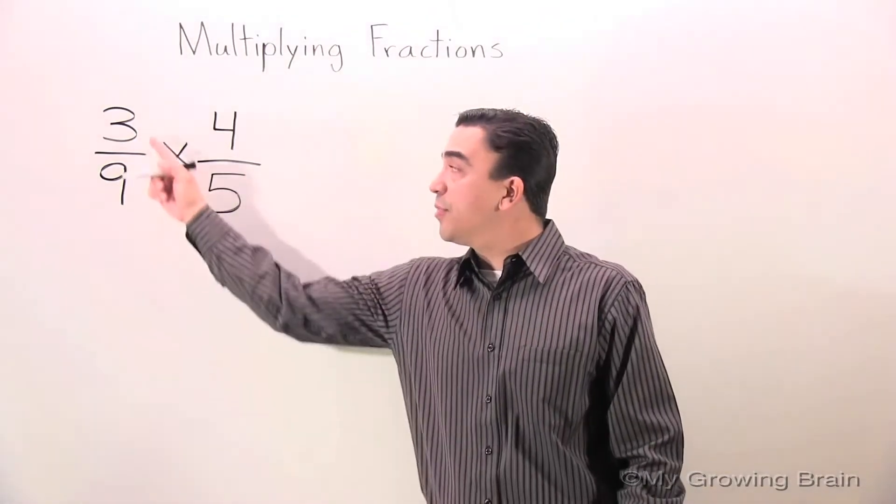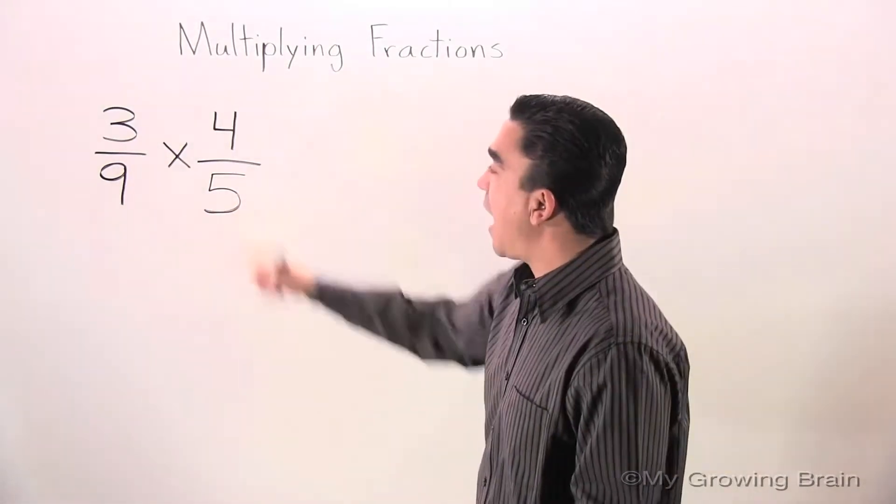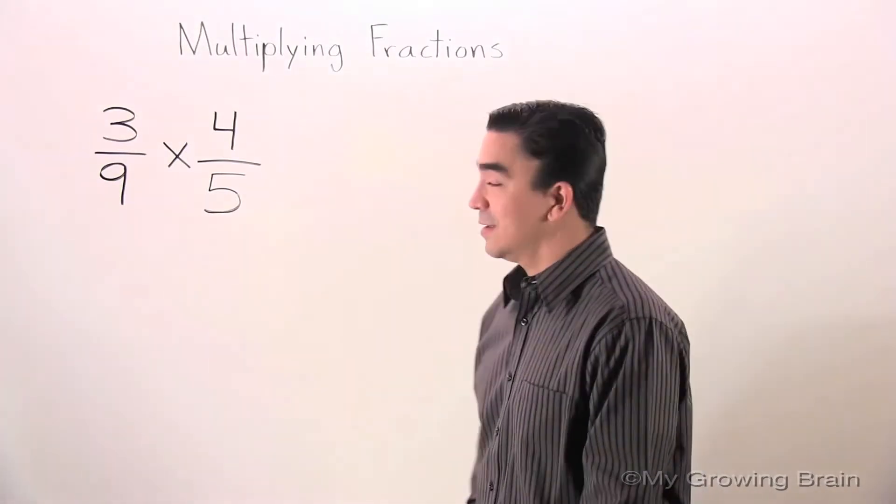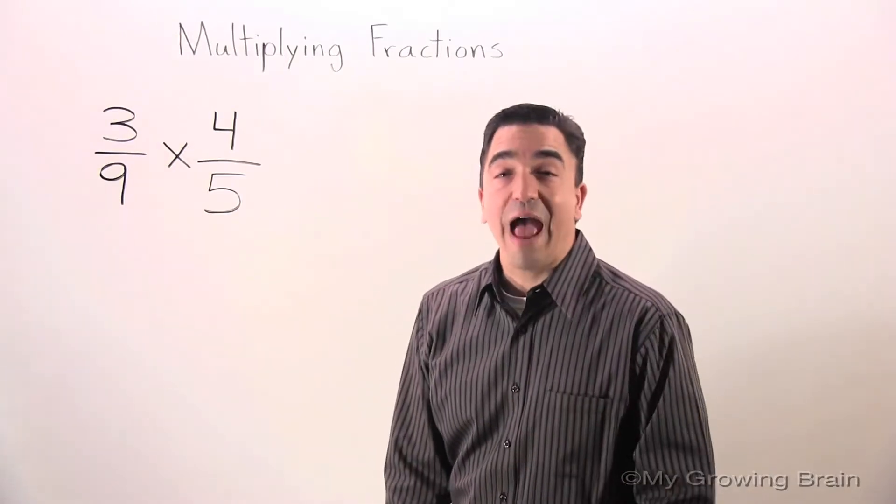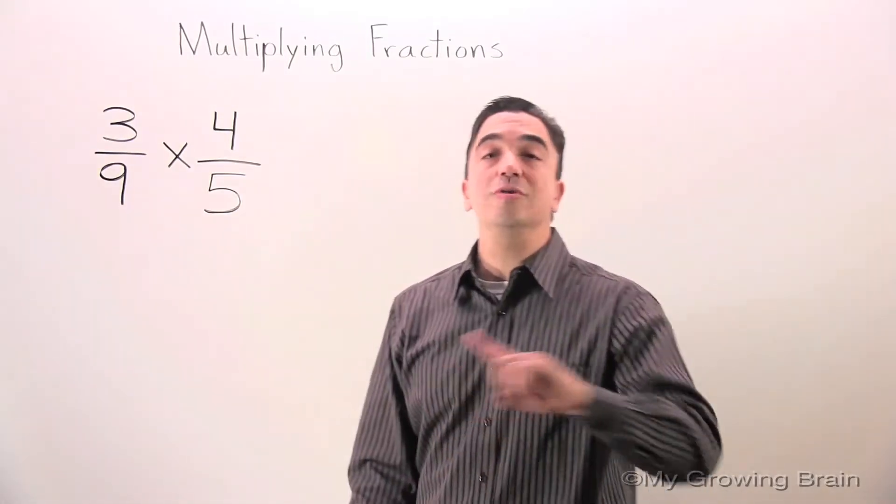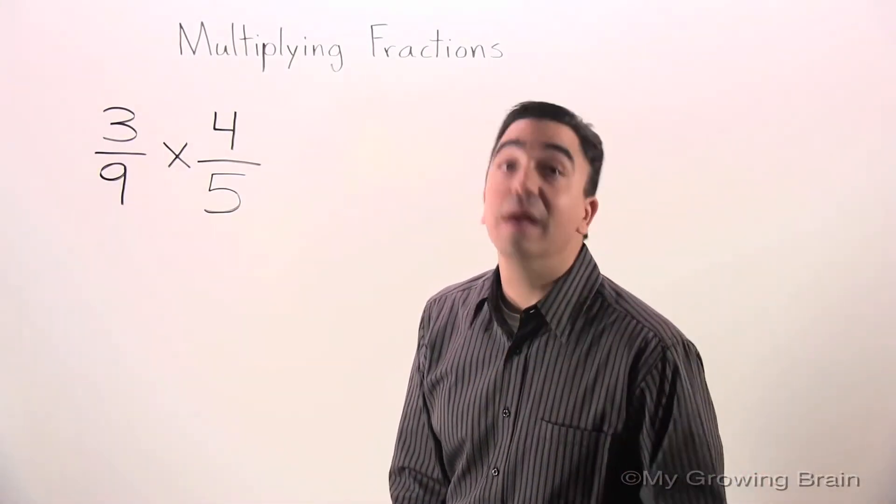Here's our problem: 3 ninths times 4 fifths. I love doing these type of problems. When you multiply fractions, the denominators do not have to be the same. That's cool.